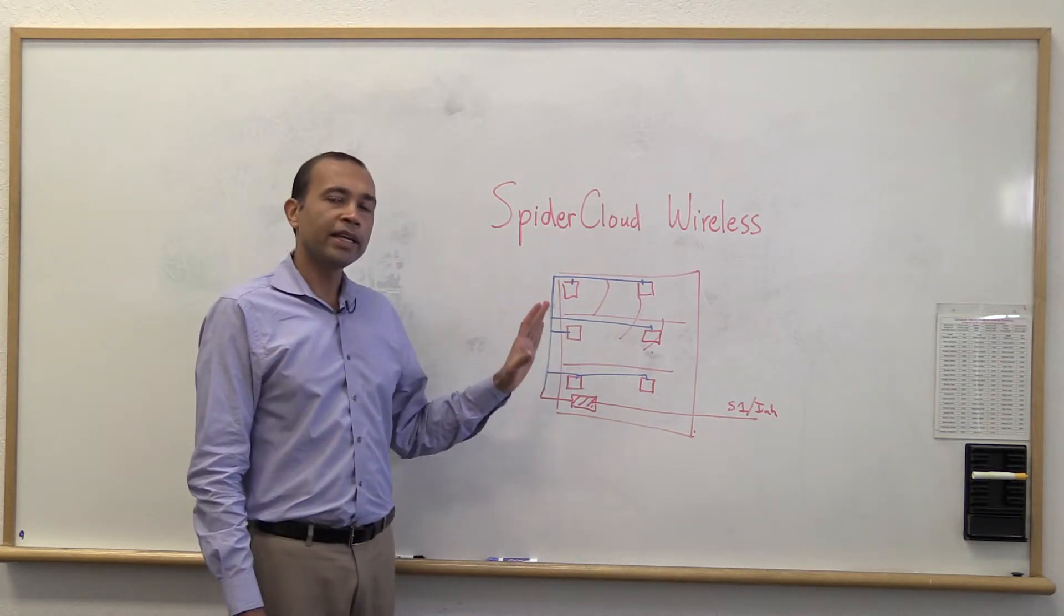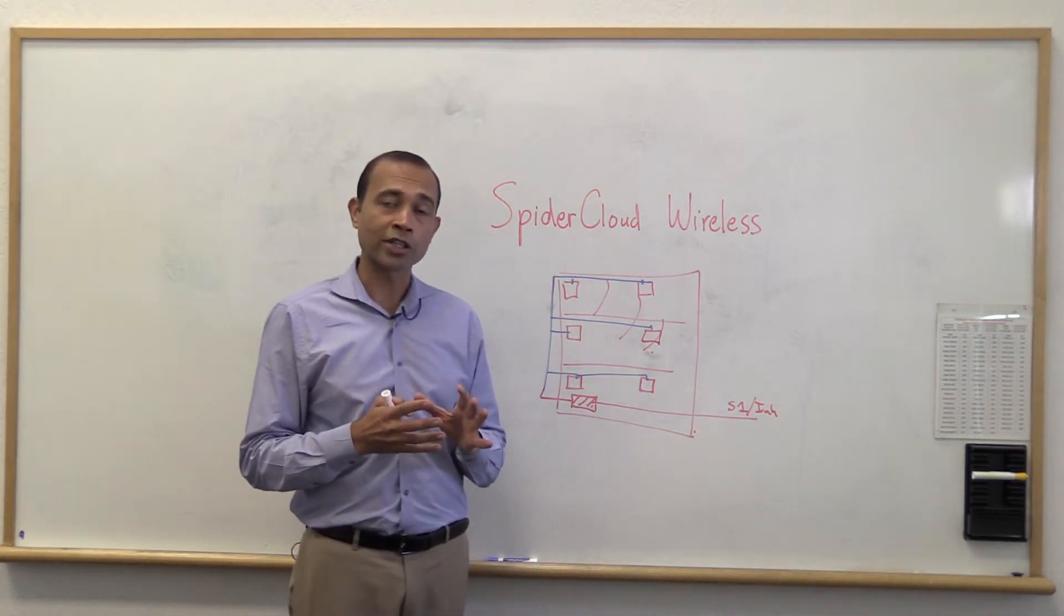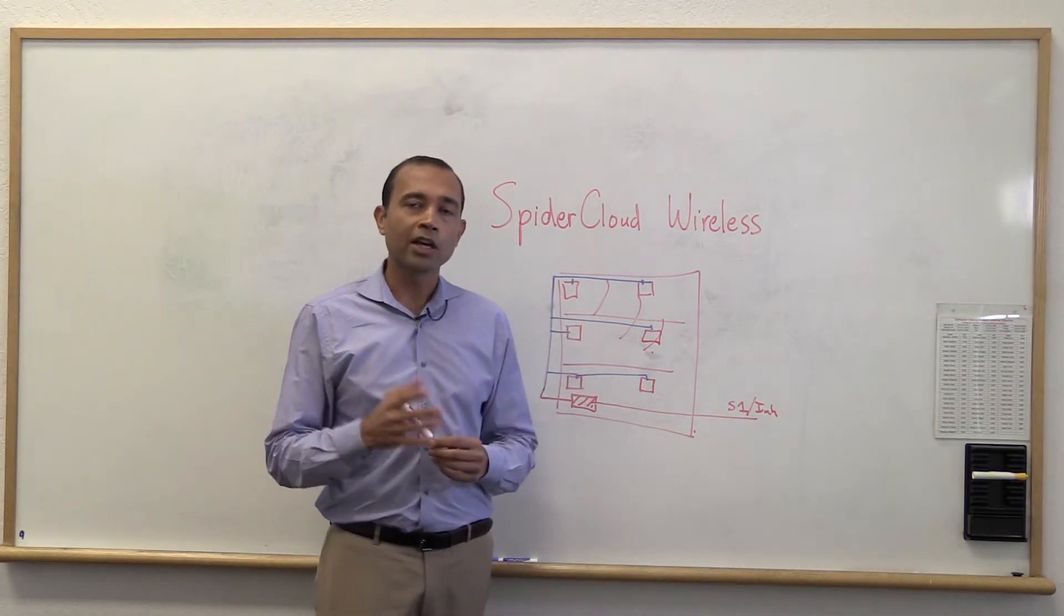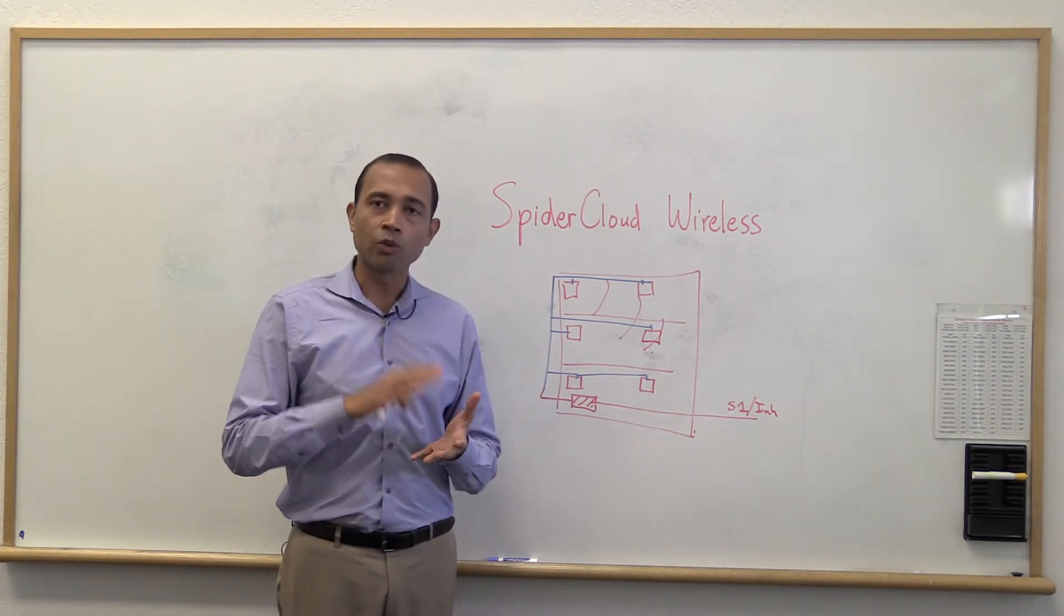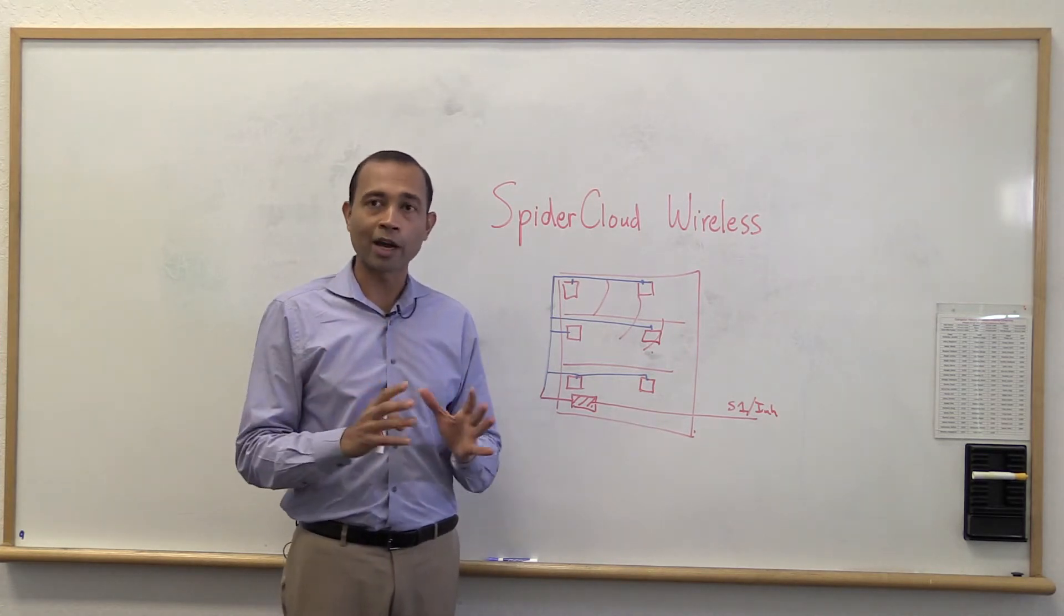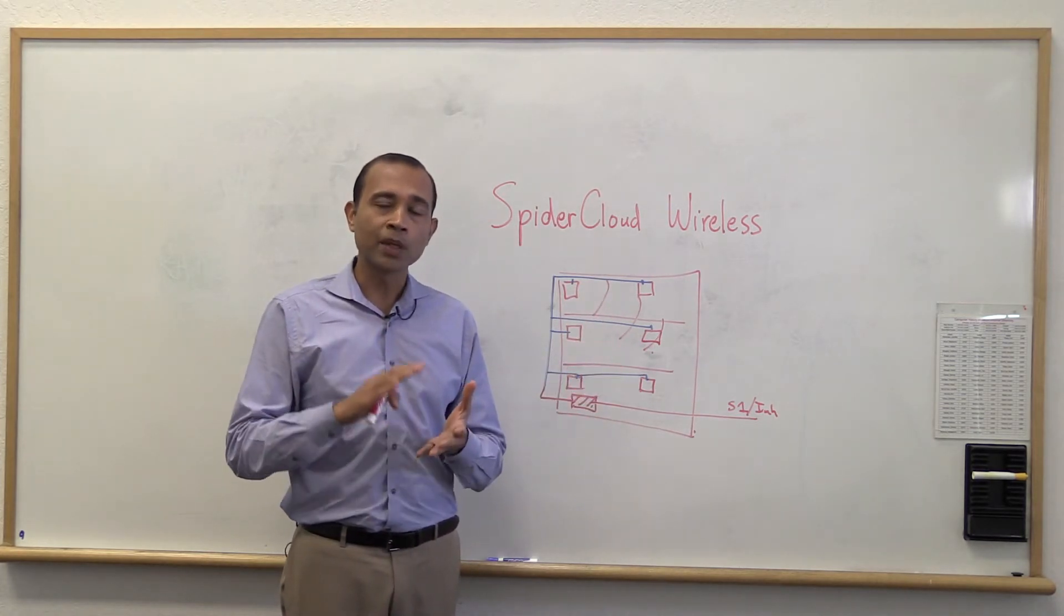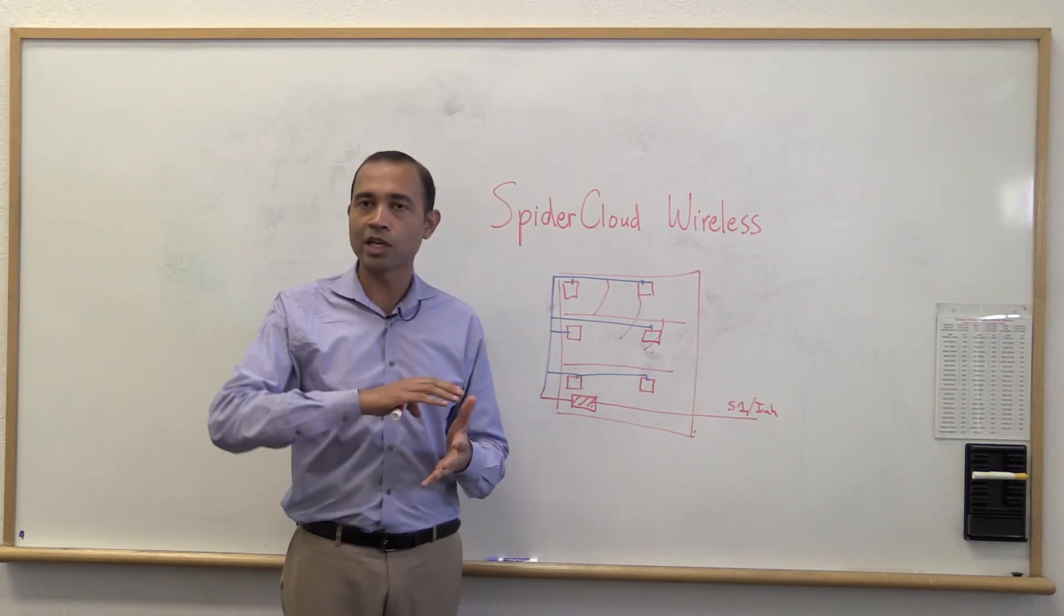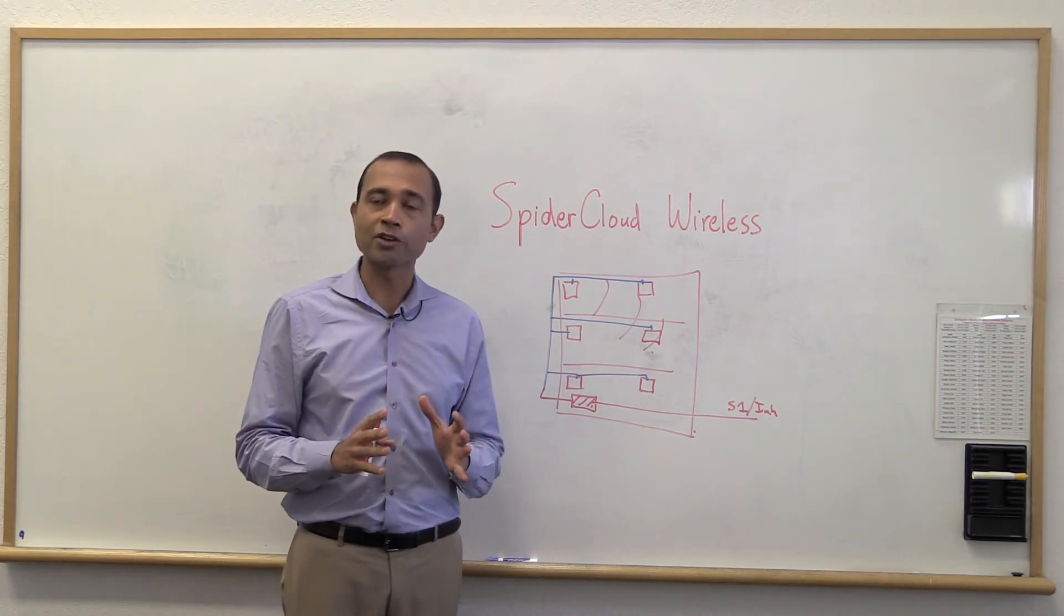Next, we make this really easy. SpyderCloud has very advanced self-organizing network or SON technology, which means that even if you have a network of a hundred access points inside a building, you actually don't have to configure each of them by hand. Each of our access points have built-in radio environment monitoring capability, so we can sense the macro cellular environment as well as all the other small cells inside the building. And then use this information to basically configure all our access points automatically to set up neighbor tables and scrambling codes and PCIs and whatever RF configuration that you need.